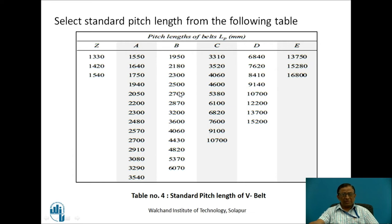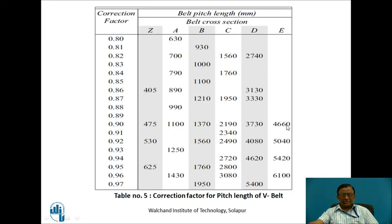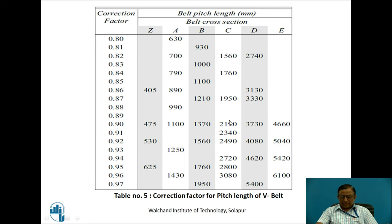However, this calculated pitch length is not available as a standard, so once again we go for the standard pitch length provided by manufacturer's data. For a particular cross section, I check the calculated value of pitch length and select the nearest standard pitch length value. As we change the pitch length from the required value, a variation occurs, and to account for this we use a belt pitch length correction factor. For example, for a B belt with a standard pitch length of 1950, the correction factor is 0.97.